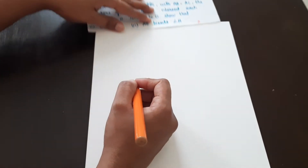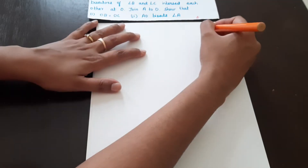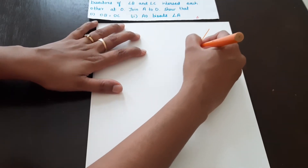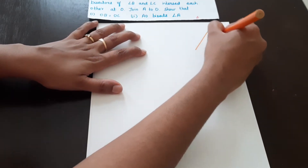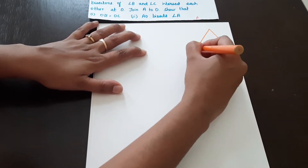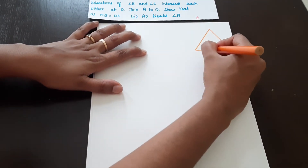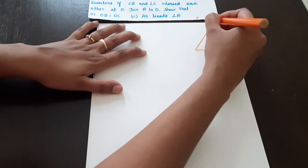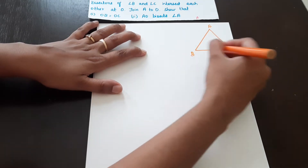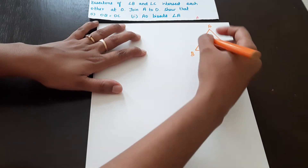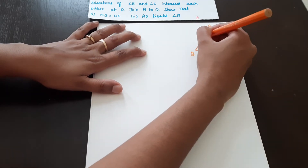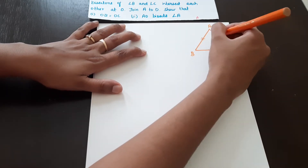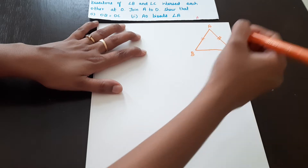I am going to draw an isosceles triangle. It is A, B, C. So in Question No. 1, AB is equal to AC.